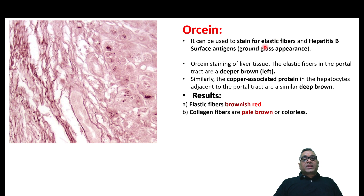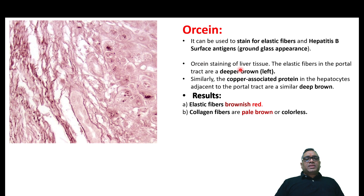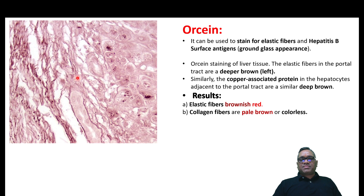Orcein is another special stain used for elastic fibers as well as for HBsAg — hepatitis B surface antigen — which shows ground glass appearance in liver biopsy. The color is dark brown or brownish-red for elastic fibers, and collagen will be pale brown. So pale brown is collagen and dark brown or brownish-red is elastic fiber. Orcein is for elastic fiber and hepatitis B surface antigen.